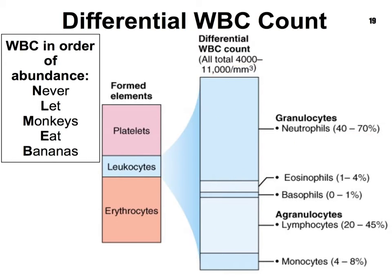It's very important that you memorize the order of abundance of the white blood cells from most abundant to least abundant. You can use this mnemonic: Never Let Monkeys Eat Bananas — where each first letter represents a white blood cell: neutrophils, lymphocytes, monocytes, eosinophils, and basophils. Bear in mind that I can always ask you for this order in the opposite direction, so pay attention to how the question is phrased.